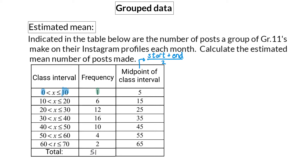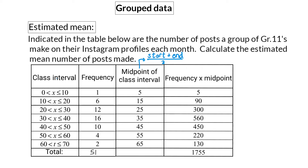This means that we accept that the one person in the class of 0 to 10 made 5 posts. Similarly, we accept that the six people in the class interval 10 to 20 all made 15 posts, and it continues like that. Therefore our next step is to take the frequency and multiply it with the midpoint of each class interval. By adding up all these values we get the sum of our estimated set of data.